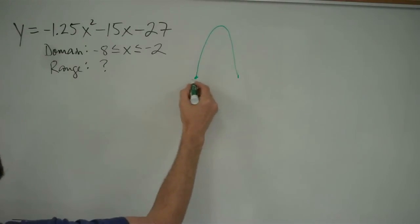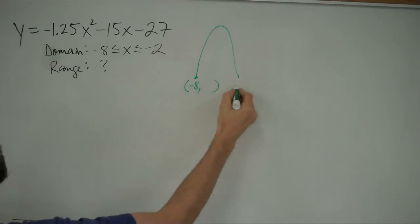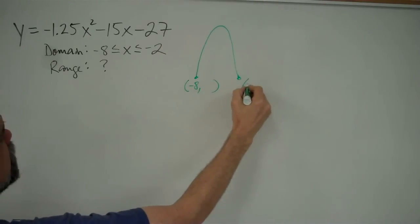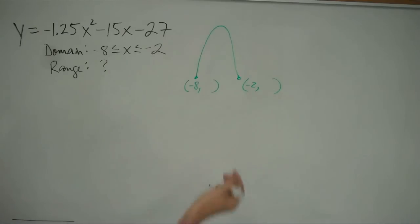And it goes from negative 8 something to negative 2 something. And the way that I've drawn this, it looks like these two points have the same y coordinate. They probably don't. I have no idea what the y coordinate is right now. I have to plug negative 8 and negative 2 into this formula and see what they are.